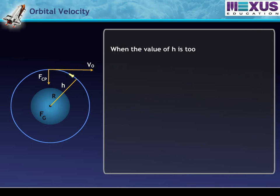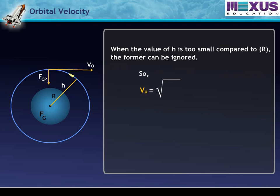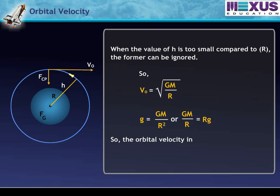When the value of H is too small compared to R, the former can be ignored. So VO equals the square root of G times M upon R. Since g equals G times M upon R squared, G times M upon R equals Rg. Therefore, the orbital velocity in terms of acceleration due to gravity is VO equals the square root of gR.